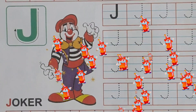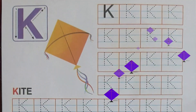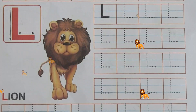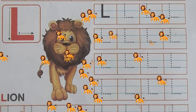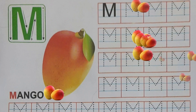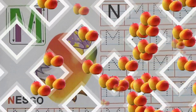J for Joker, K for Kite, L for Lion, M for Mango.